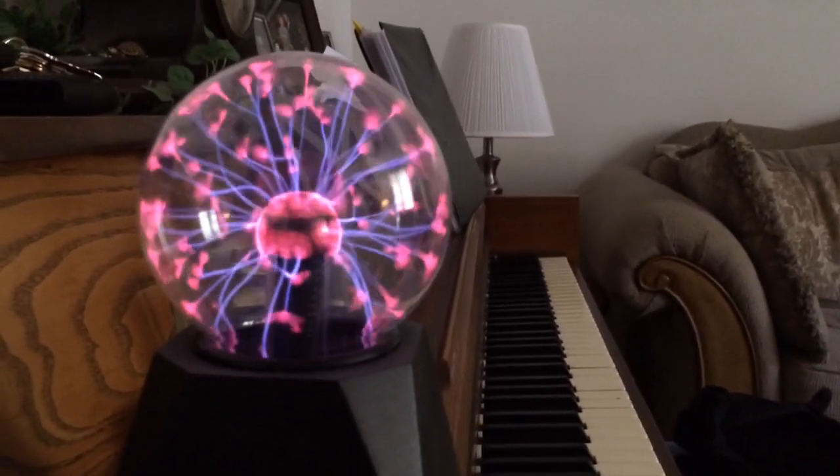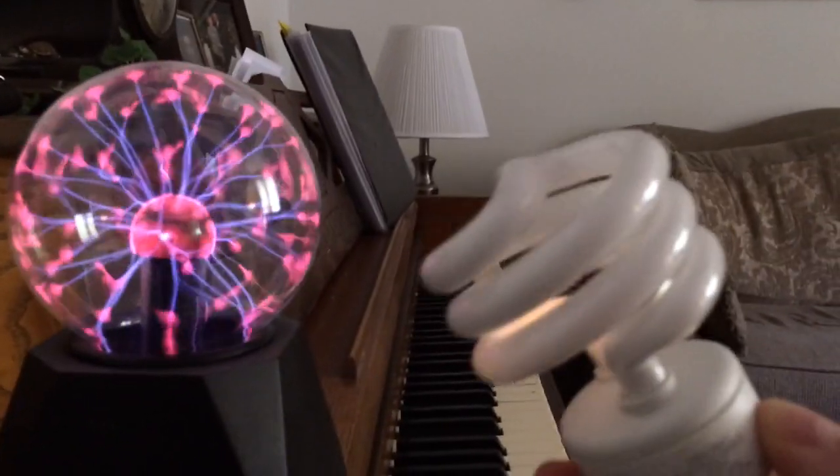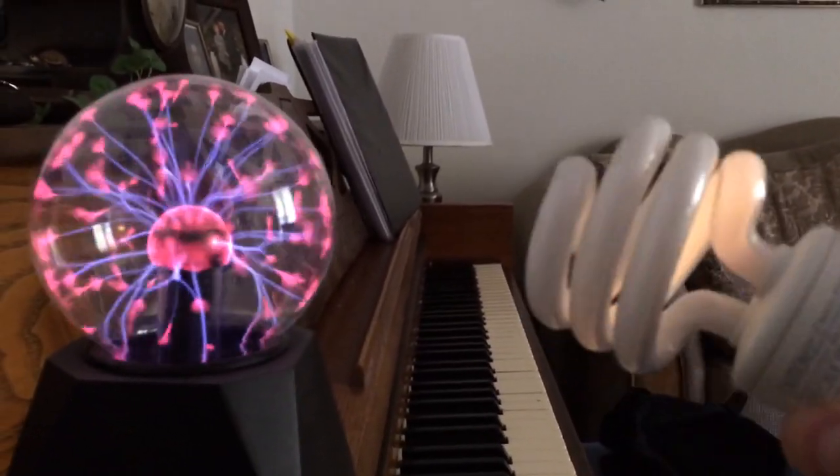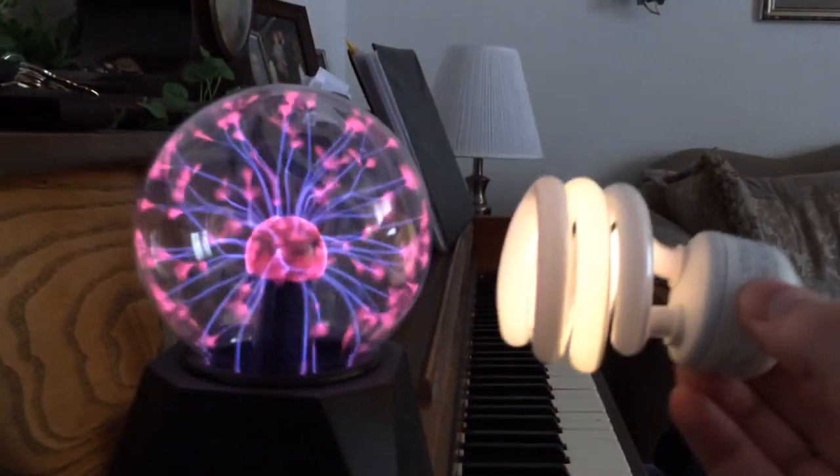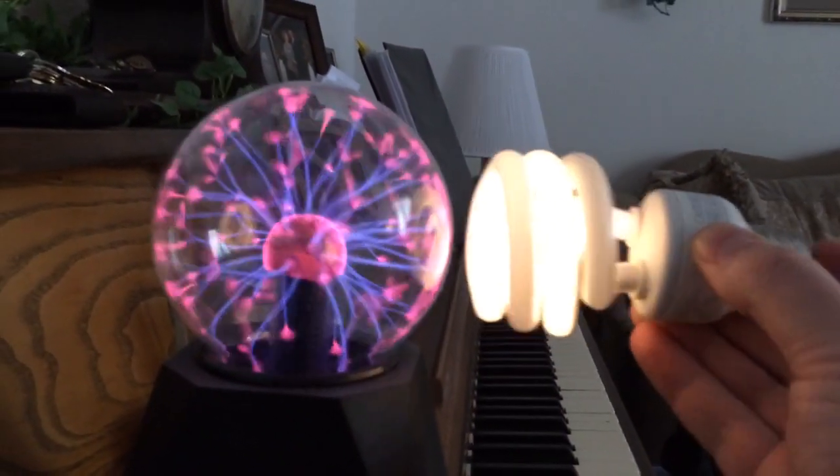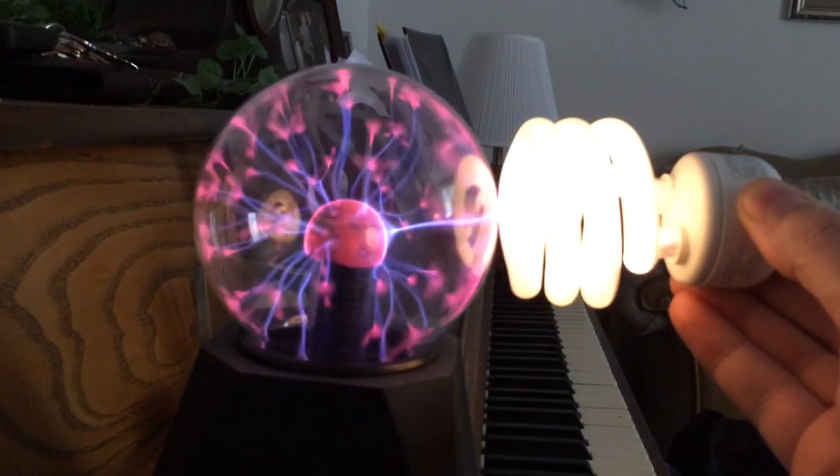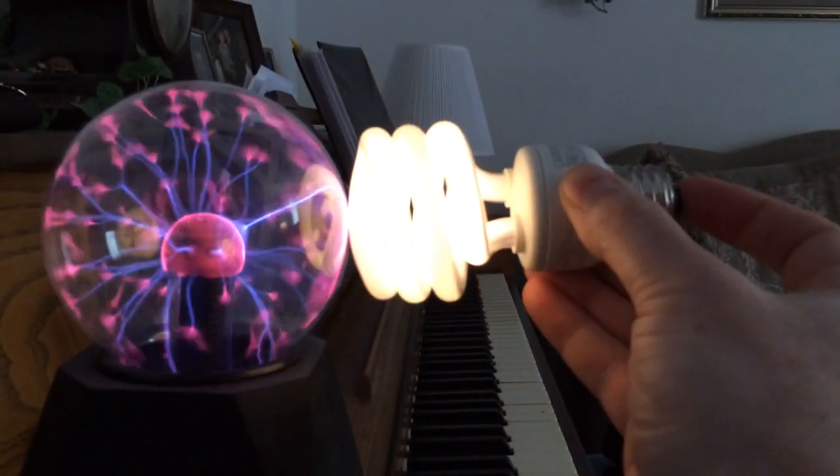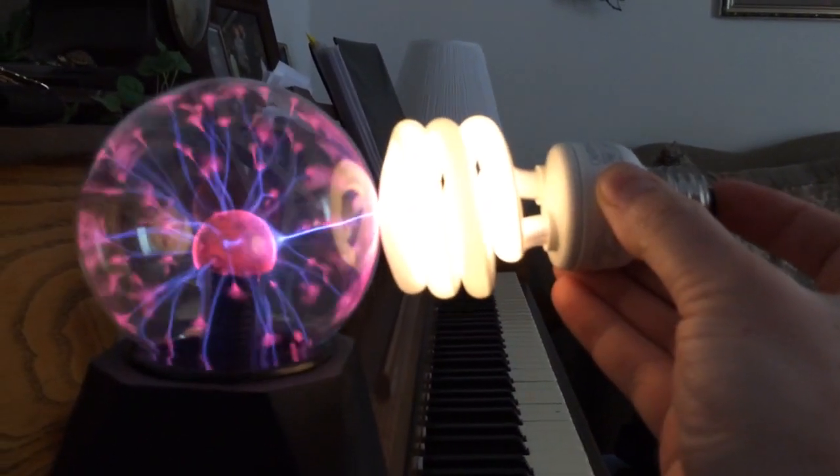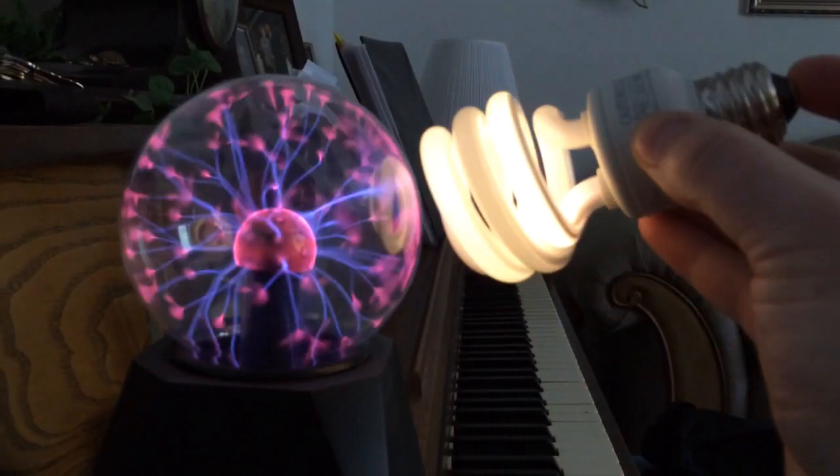If you haven't seen any other plasma videos yet, you can do some cool things with one of these. Take one of these little fluorescent bulbs, put it over near it, and of course it glows. Now the interesting thing is if you put your finger on the end of it, it glows even more. Isn't that cool?